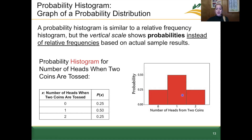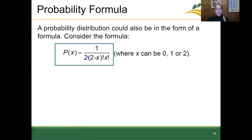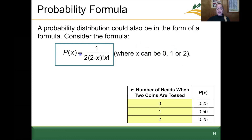Probability distributions can be represented as a table, a histogram, or with a formula. The formula is the probability of x equals 1 divided by 2 multiplied by the quantity (2 minus x) factorial, multiplied by x factorial. In our case, x is our variable, so x can equal 0, 1, or 2. This won't always be the case — the variable values depend on whatever problem we're working on.